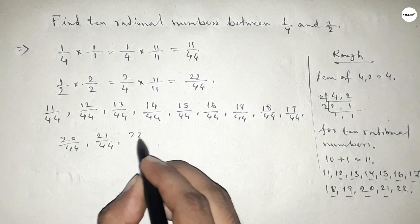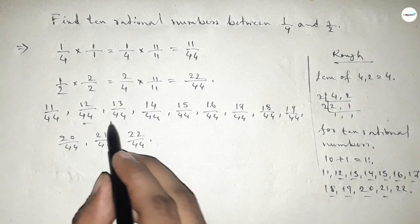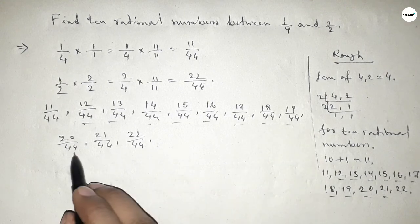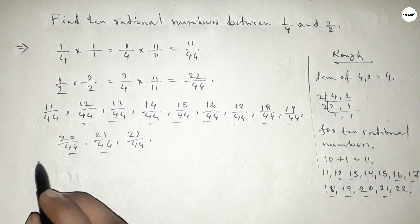Among these, these are the required rational numbers between 1/4 and 1/2.